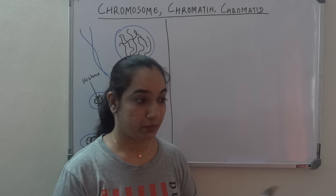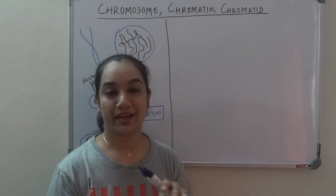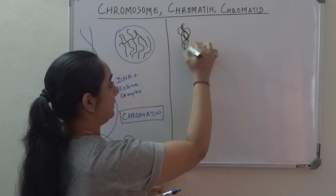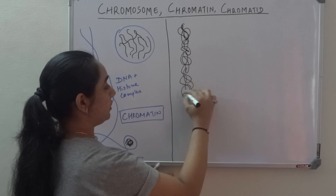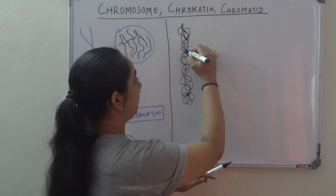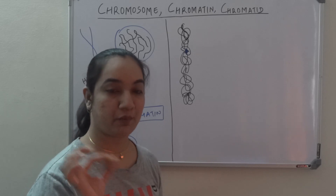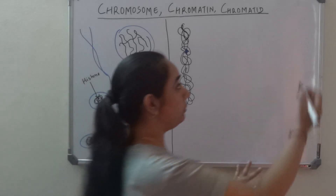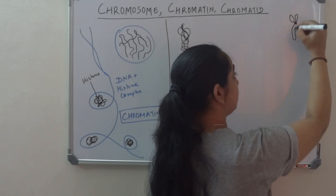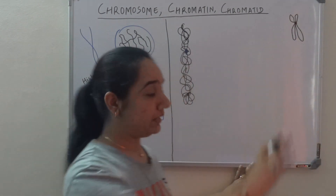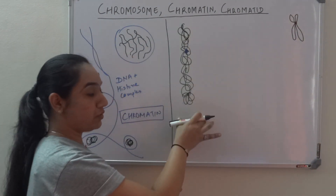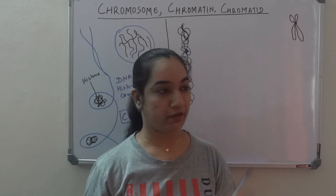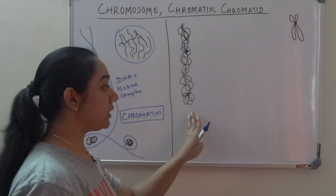When the cell has to undergo cell division — maybe mitosis or meiosis — the DNA will start getting condensed, and at that time this condensed structure of DNA appears. This condensed form of DNA is nothing but a chromosome. Now, I know you might be thinking of a specific shape when I say chromosome — I'll come to that later. Humans have 23 pairs of chromosomes.